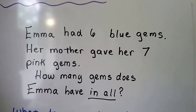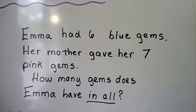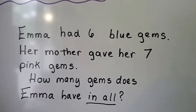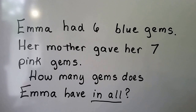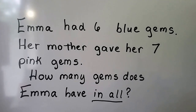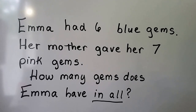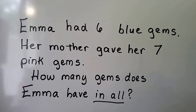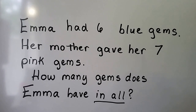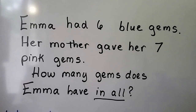Here's our first one. Emma had six blue gems. Her mother gave her seven pink gems. How many gems does Emma have in all?